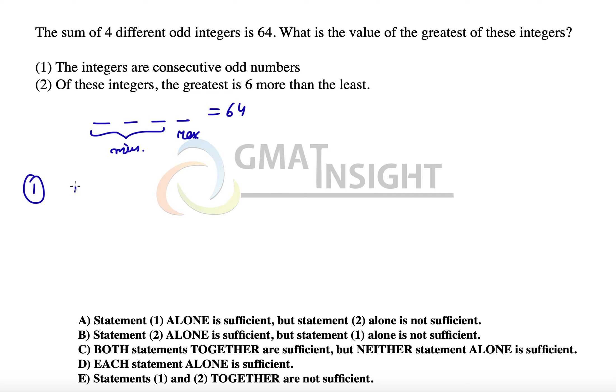We know that the first number is a, the next number is a plus 2, the next number is a plus 4, and the next number is a plus 6. So the sum equals 64. We can quickly add all four of them: it gives us 4a is equal to 64 minus 12, which is equal to